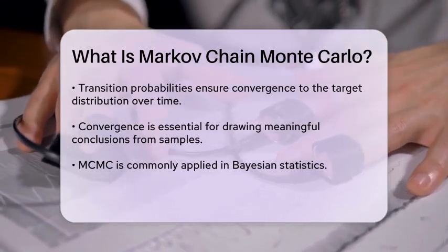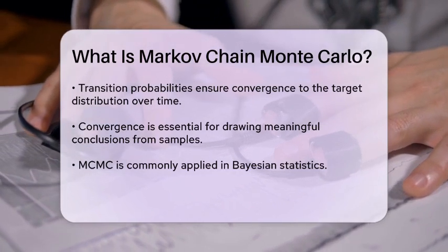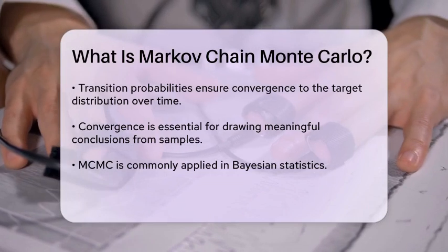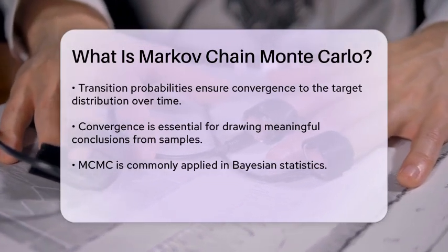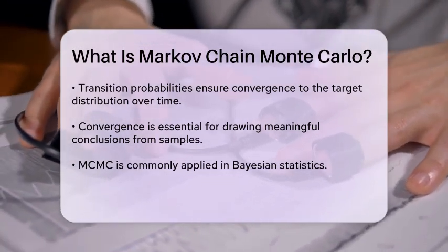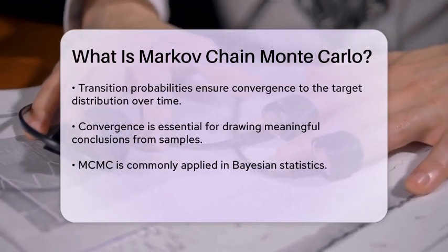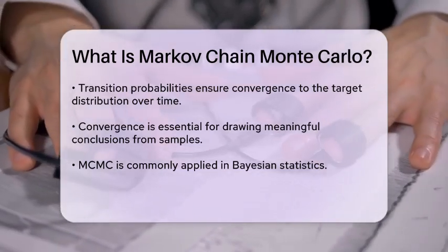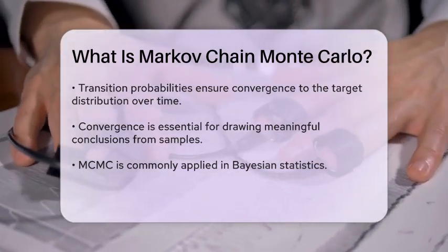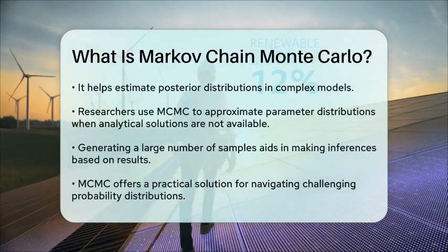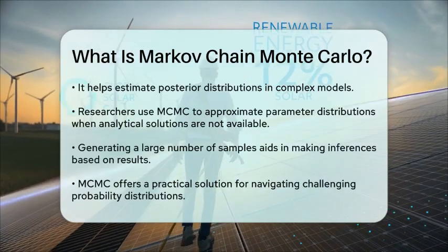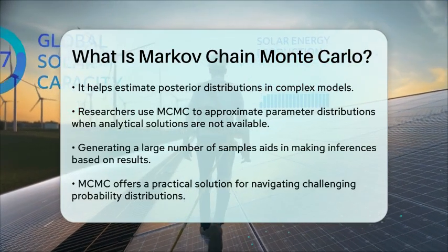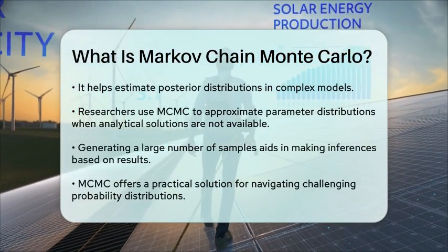One common application of Markov-Chain Monte Carlo is in Bayesian statistics, where it helps in estimating posterior distributions. Researchers often use MCMC to approximate the distribution of parameters in complex models, especially when analytical solutions are not feasible. By generating a large number of samples, they can approximate the desired distribution and make inferences based on the results.